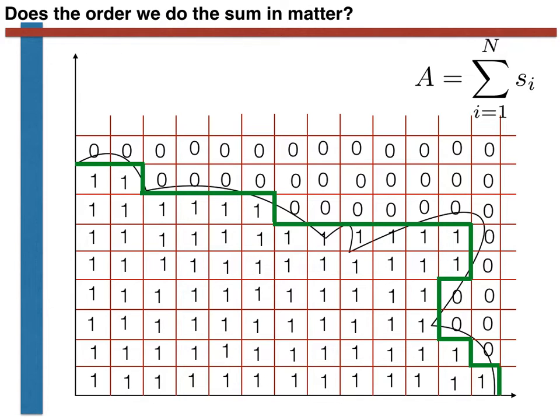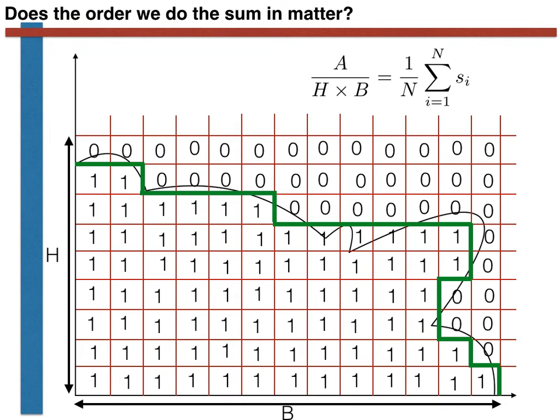Now suppose that the height of the grid was H, and the width of the grid was B, and that we don't want to calculate the integral, but that instead we want to calculate the quantity shown in the top right of the slide, i.e. the area under the green line divided by the total area of the grid, H times B. This is obviously equal to the sum of all the s_i values divided by the total number of s_i values. Furthermore, if we calculate this quantity by summing over all the s_i values once, twice, or any integer number of times, this quantity will always take the same value.